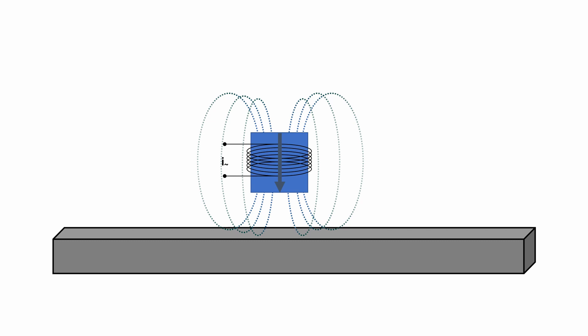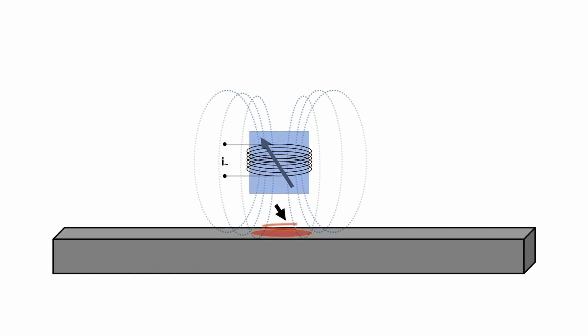Now in the application, we cannot move a magnet back and forth all the time. Therefore, an induction coil is used instead of a magnet. We then apply an alternating current to the coil and thus generate an alternating magnetic field, i.e., a moving magnetic field.